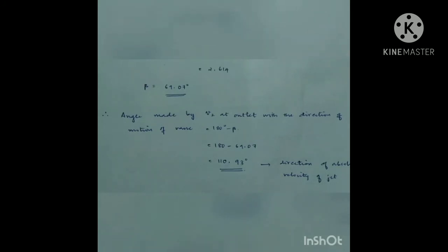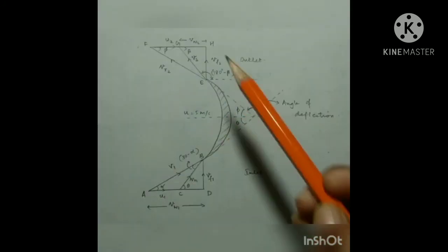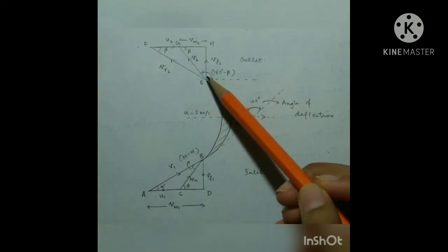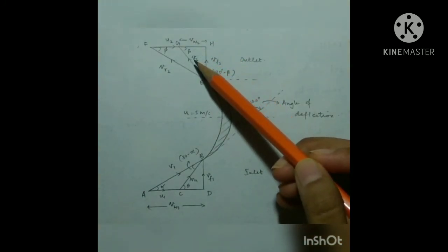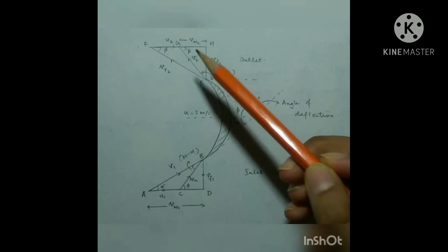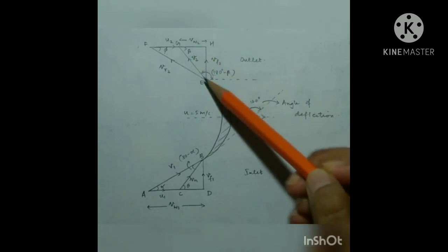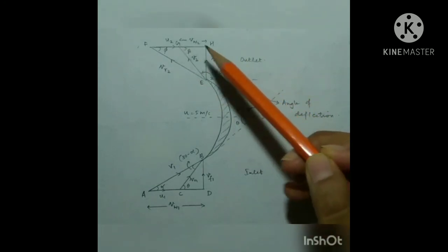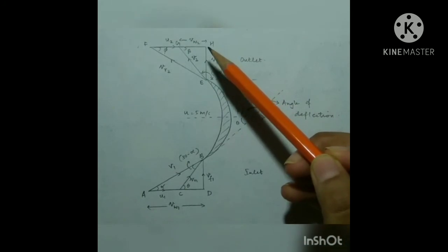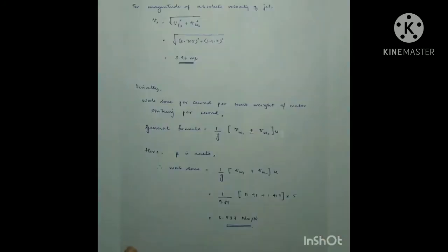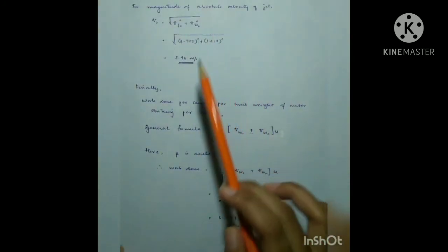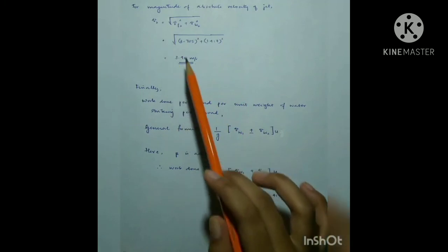Now we find the magnitude of the absolute velocity of the jet at the outlet. V2 = √(Vf2² + Vw2²). Substituting the values for Vf2 and Vw2, we get the value of V2. We have now found the absolute velocity of the jet at the outlet in both magnitude and direction.